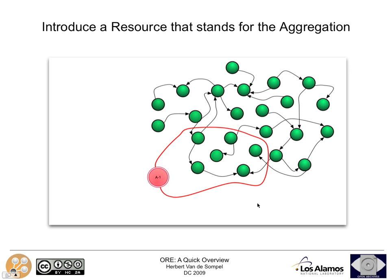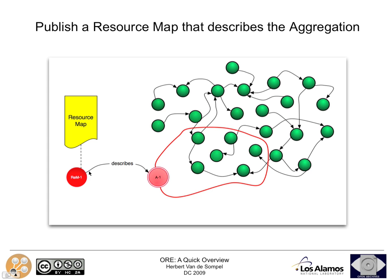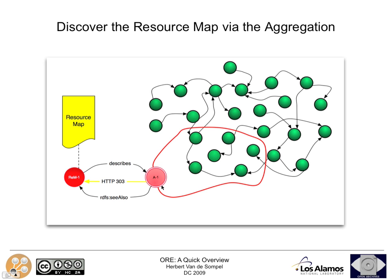The way ORE proposes to solve this is: first, introduce a resource that stands for the union of these resources — that is the aggregation. And then second, introduce a document that describes this aggregation, meaning it introduces this URI and declares which resources, identified by their URIs, are part of that aggregation. Following the linked data recommendations, the aggregation is a non-information resource identified by an HTTP URI. When dereferencing that HTTP URI, one ends up with an HTTP 303 redirect to the resource map URI. The resource map is the document that describes the aggregation.